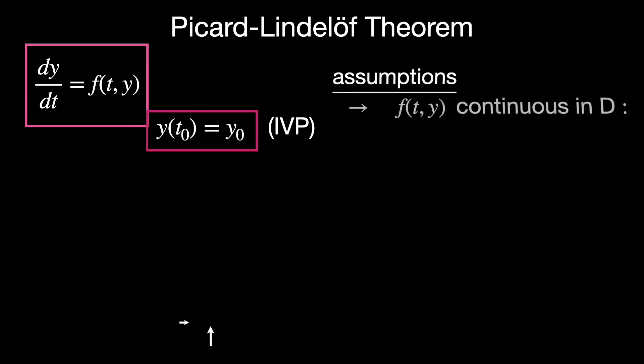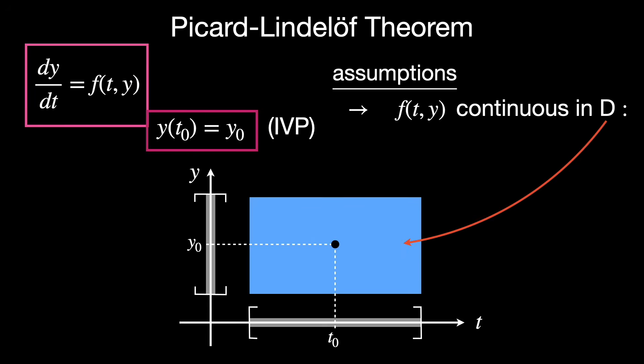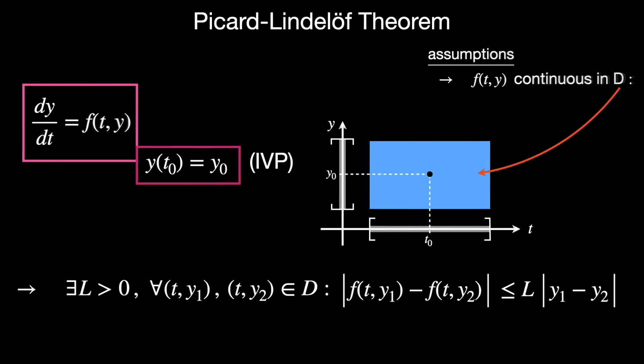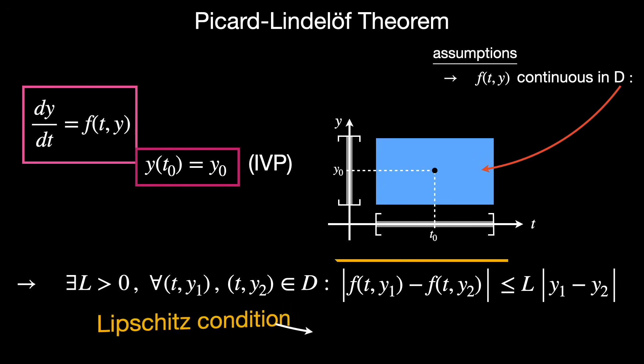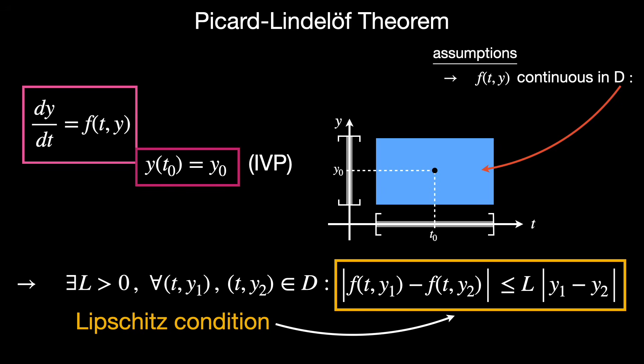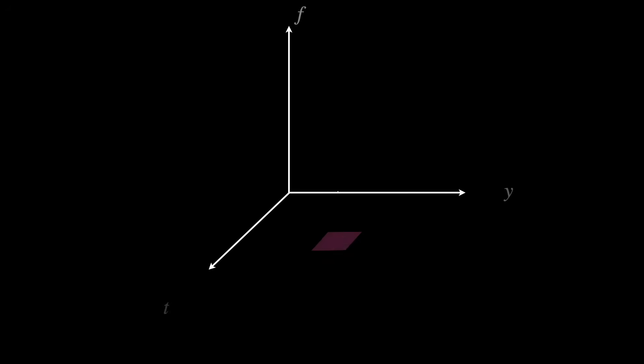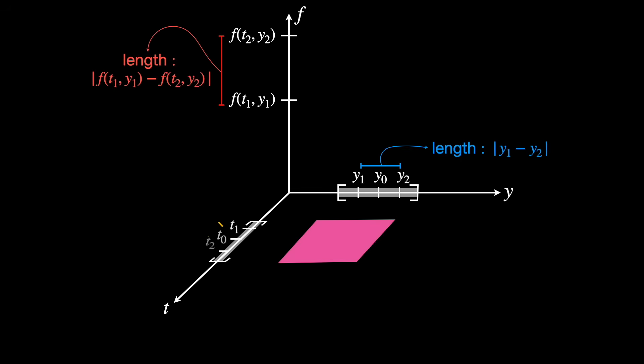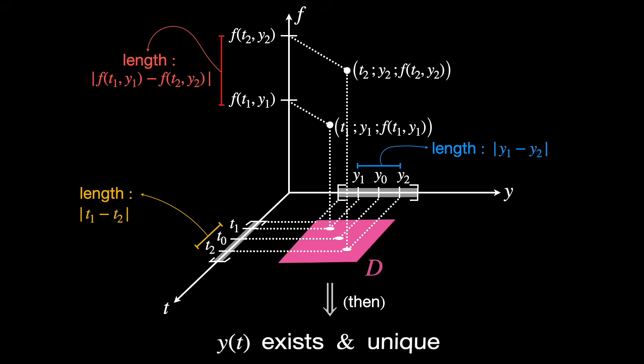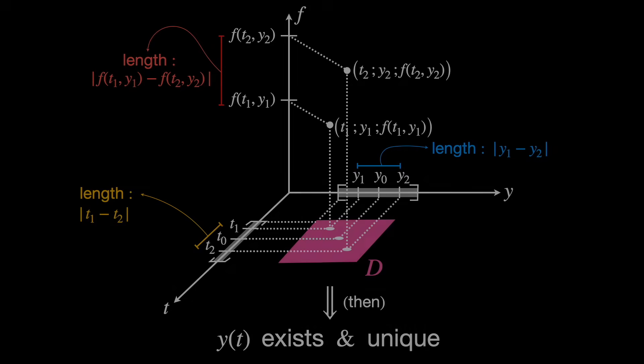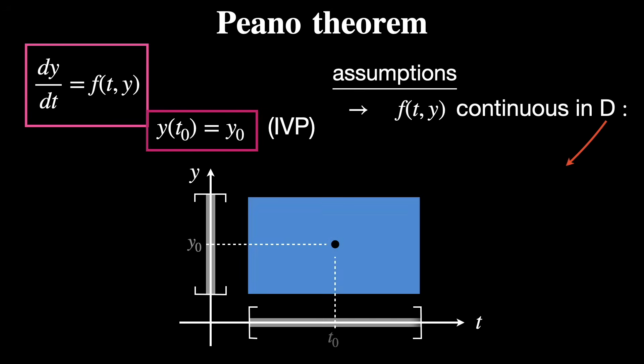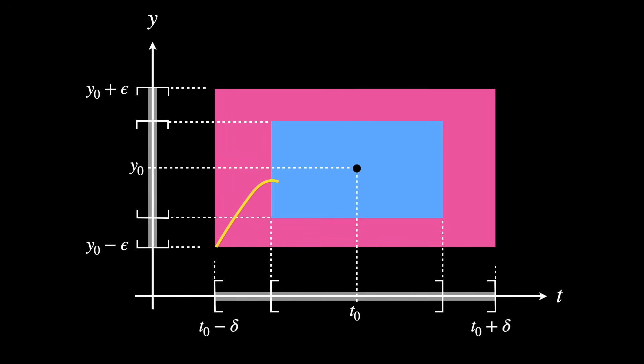The Picard-Lindelöf theorem guarantees existence and uniqueness under certain smoothness conditions. In this initial value problem, we assume the function to be continuous in a certain rectangular domain, and we assume what is called the Lipschitz condition. Then the theorem says that there exists a unique solution. We won't get into the details here, but the Lipschitz condition is exactly what prevents the function from changing too drastically in the vertical direction. Another important result is Peano's theorem, which assures existence of solutions even when uniqueness can't be guaranteed. It assumes that f is continuous in a rectangular domain, just as before, but there is no Lipschitz condition this time, and the implication is that there is at least one solution locally.